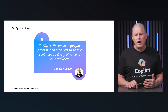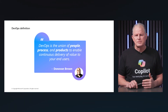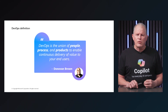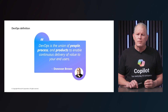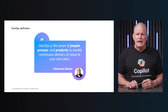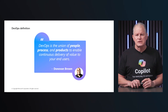The products element involves the tools and technologies that support the DevOps practices. This includes automation tools for building, testing, and deploying code, as well as monitoring and logging tools to ensure the health and performance of applications in production. By leveraging the right tools, teams can strengthen their workflows, reduce manual effort, and increase the reliability and scalability of their systems.